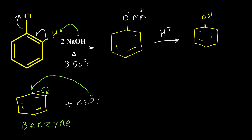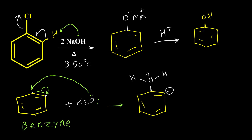The water can attack the triple bond and push the pi bond to the adjacent carbon, then this intermediate forms with OH2 positive and a negative charge on the next carbon. Then this carbon acts as a base, takes a hydrogen, and we get our final product.